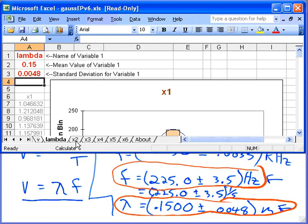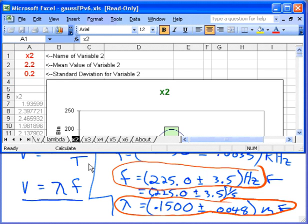And then change this one to an f for frequency, hit return, f, return. And then looking down here is 225, 225, return. And 3.5 for the uncertainty, 3.5 for the uncertainty.